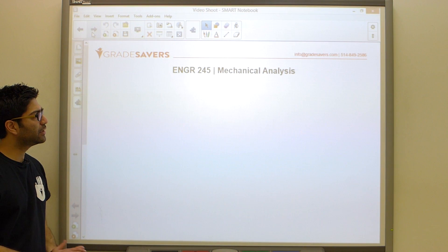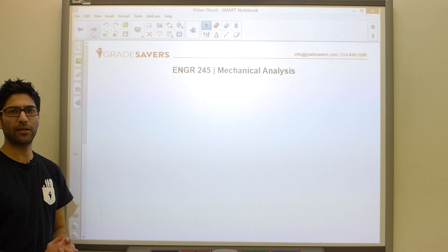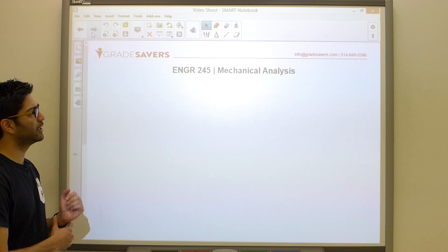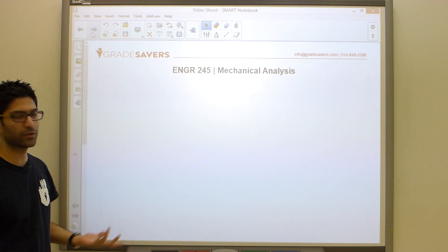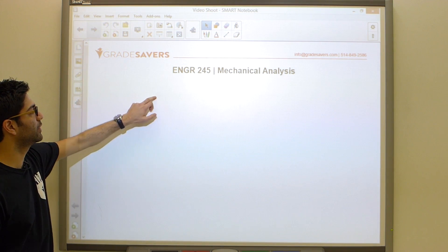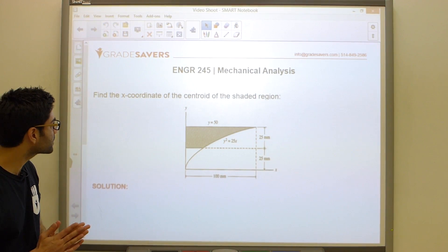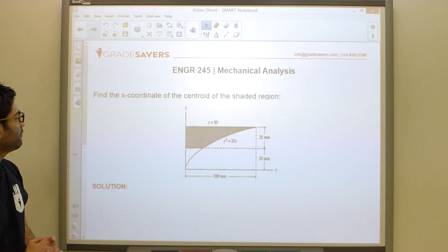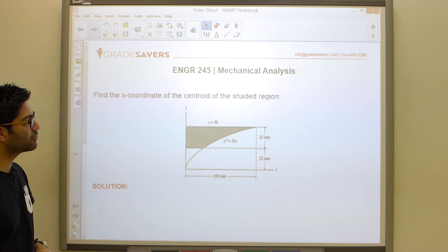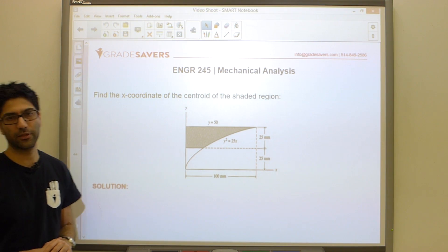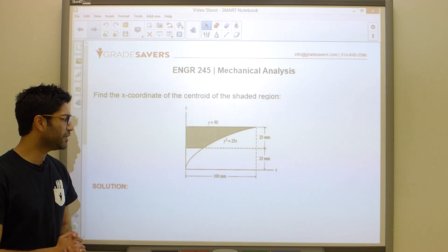Okay guys, now that we've taken a look at how to calculate centroids using both methods of basic shapes and direct integration, let's take a look at our last problem on the topic. So over here they're saying find the x-coordinate of the centroid of the shaded region. So it's a pretty typical problem.